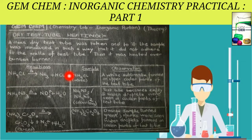Next, NH4NO3 and NH4NO2 are both colorless samples. When heated, the test tube becomes empty and water droplets appear in the cooler upper parts of the test tube. This occurs because NH4NO3 breaks down to give N2O plus water, and it is this water that forms the droplets in the cooler parts.